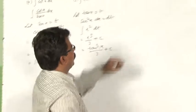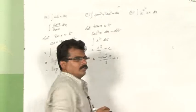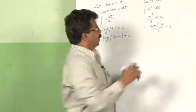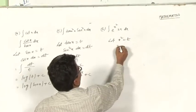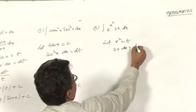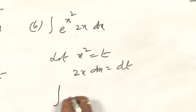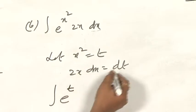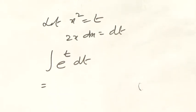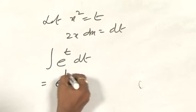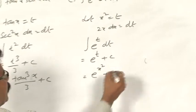One more example: integral of e^(x²) · 2x dx. What is the suitable substitution? Take x² as t. Let x² = t, then 2x dx = dt. Now the given function can be reduced to integral of e^t, since 2x dx can be written as dt. Integral of e^t is e^t, so the answer is e^t + c, that is e^(x²) + c.